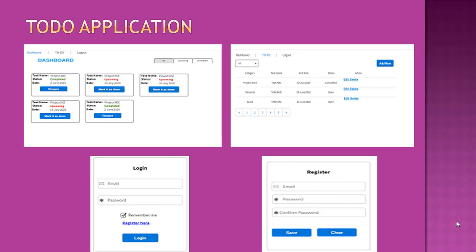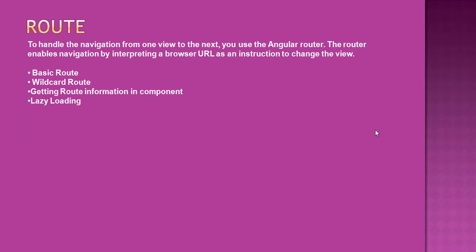This is our to-do application we are going to create in this video series, and for these components we are going to add routing. You've all heard about single page applications — for navigation we don't change the browser URL from one page to another; instead, the views are getting changed internally. In Angular terms, to handle navigation from one view to the next, we use the Angular Router.